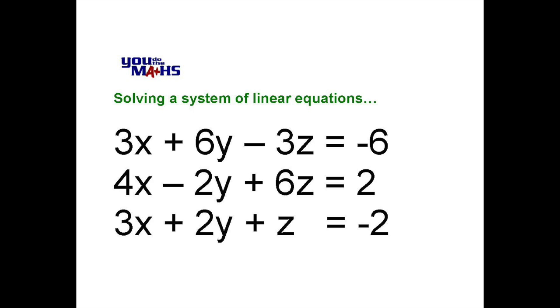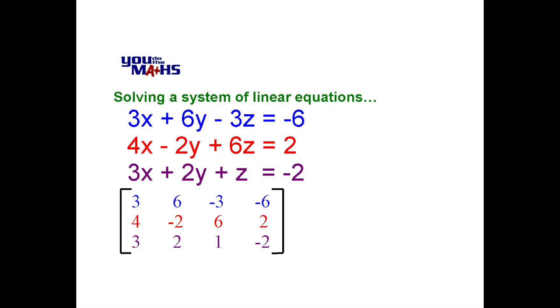The easiest way to do this is to put this into a matrix. So our first equation has coefficients 3, 6 and negative 3, so they'll go in the first row alongside the constant of negative 6. We can also see the colours for the other two equations and their coefficients will match row 2 and row 3.